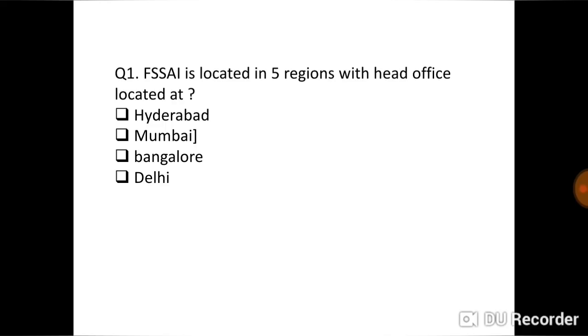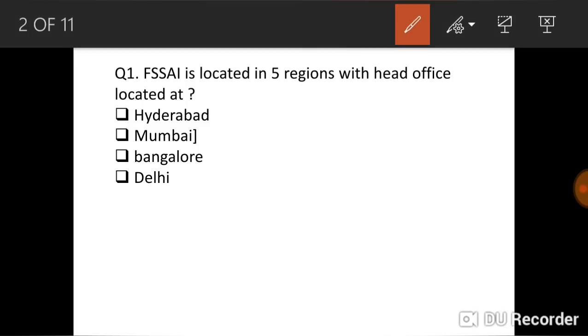The first question is: FSSAI is located in five regions with head office located at. Though there are six regional offices, the head office is located at New Delhi. So the answer is D, New Delhi. The FSSAI, Food Safety and Standards Authority of India headquarters or head office, is located at Delhi.